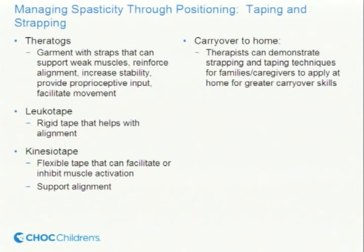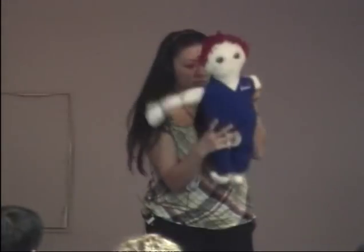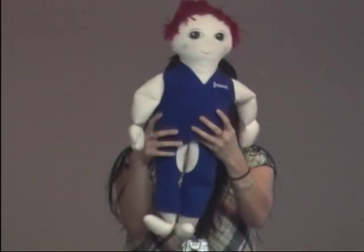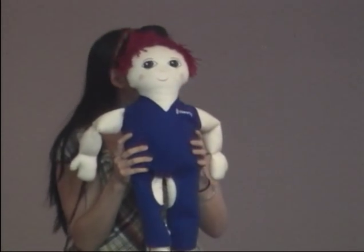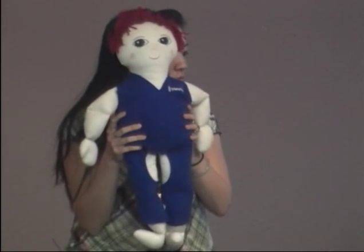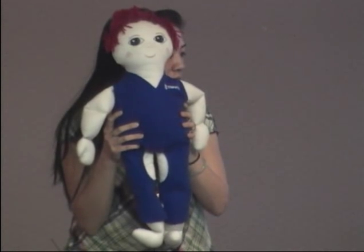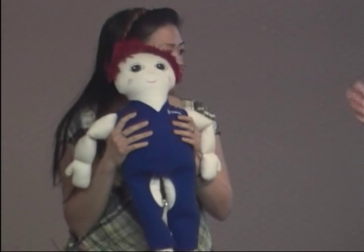Another way to manage spasticity is through positioning. One option is taping and strapping. We brought a doll to demonstrate. One technique is called Theratogs — it's a garment with straps. Because of the alignment of the straps, depending on which way you pull them, you're actually pulling the muscles and positioning the child's legs or shoulders in a position you want, creating better alignment. They're then able to strengthen muscles they haven't been able to use previously because they were compensating. Theratogs typically works better with children with milder forms of spasticity — if the tone is too high, there's too much pull against the line we're using with strapping.